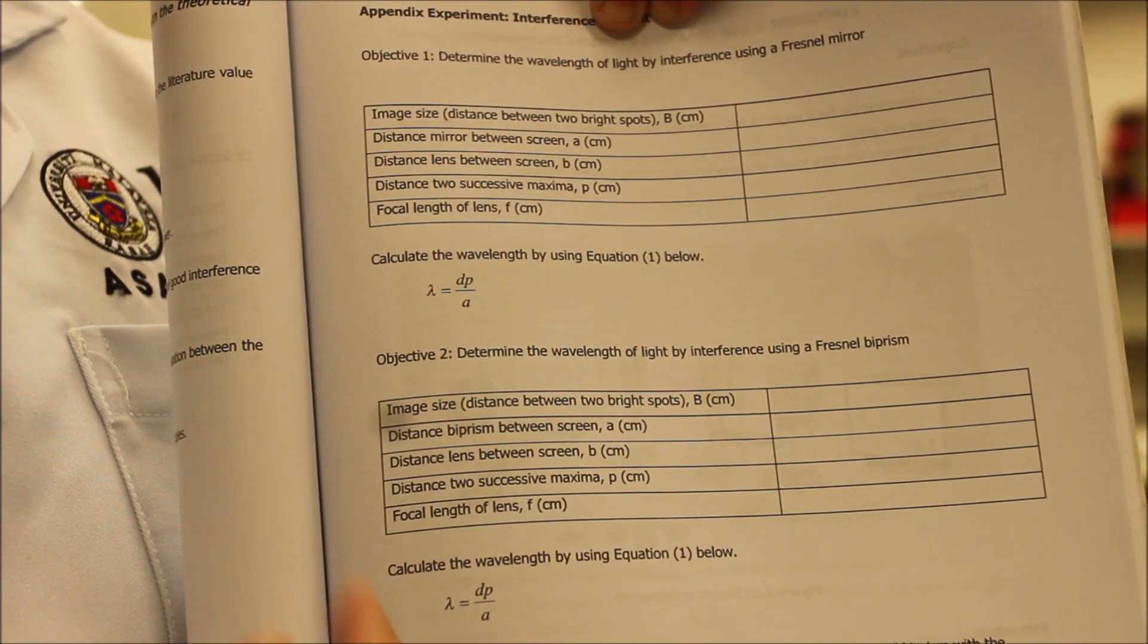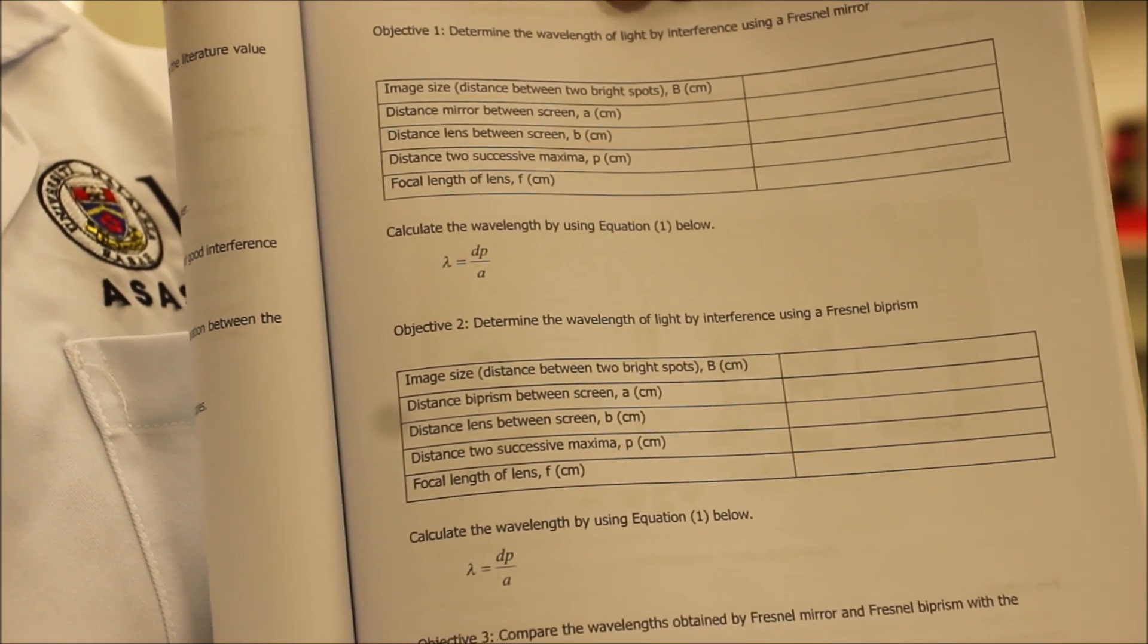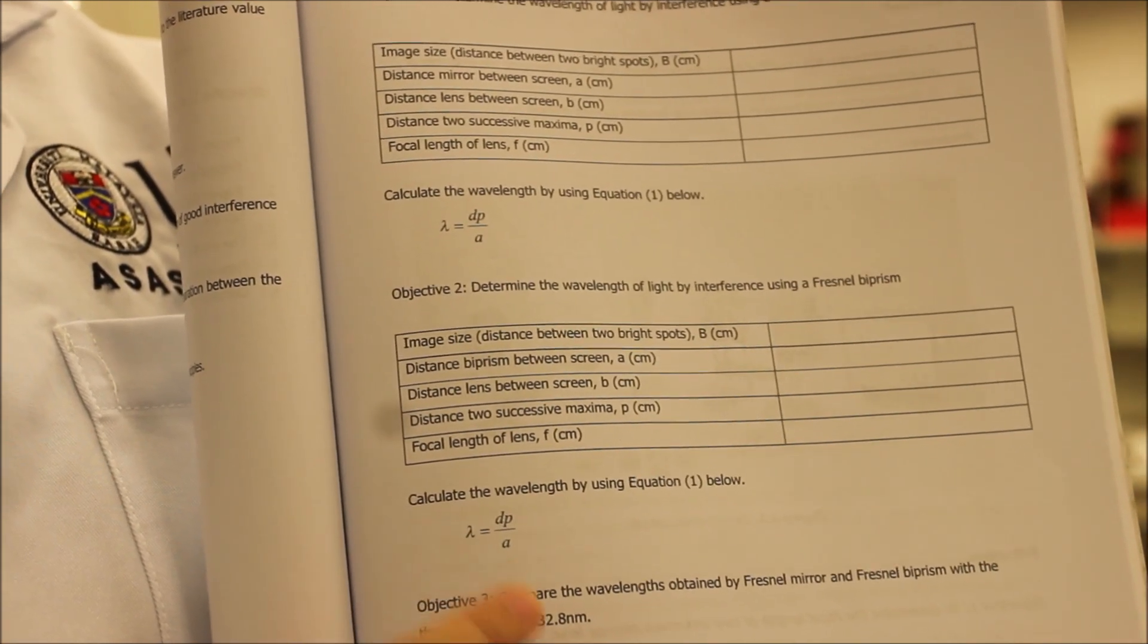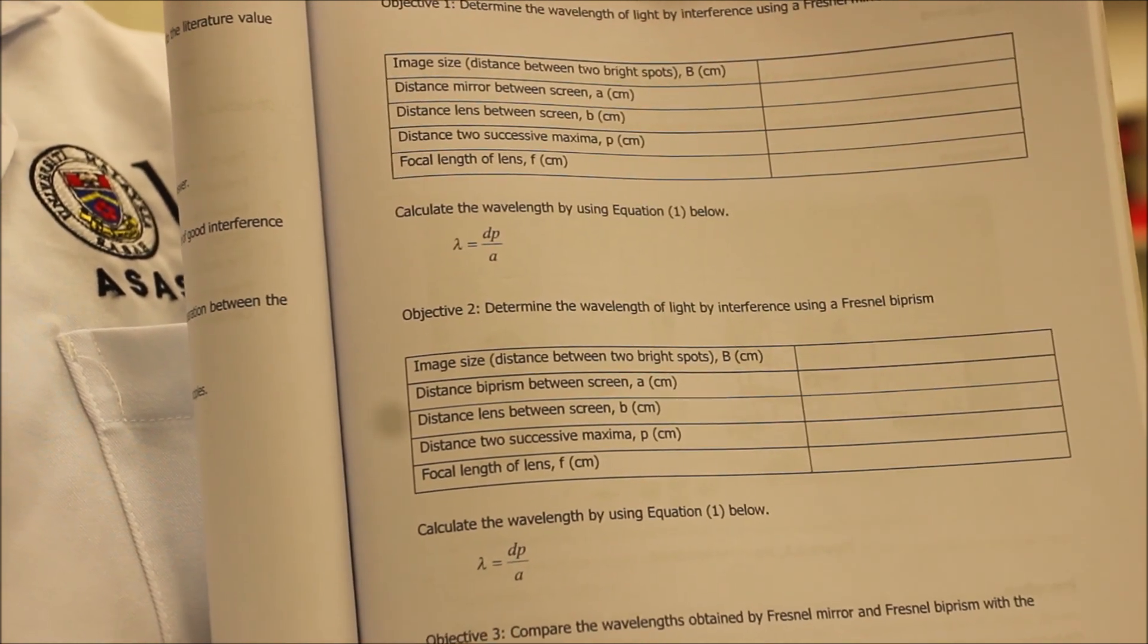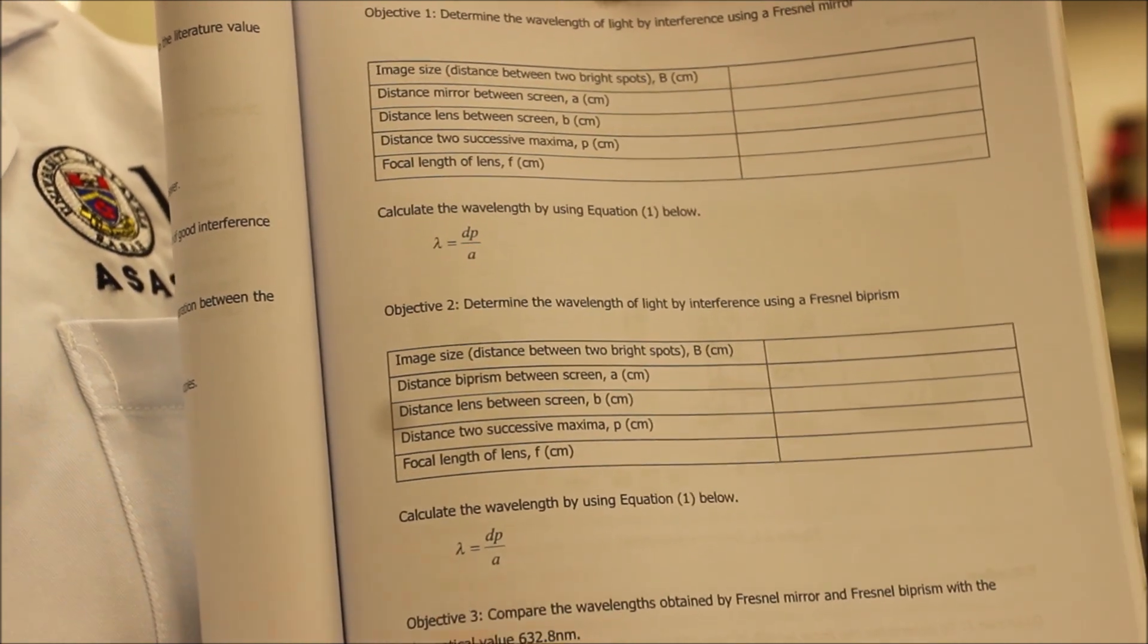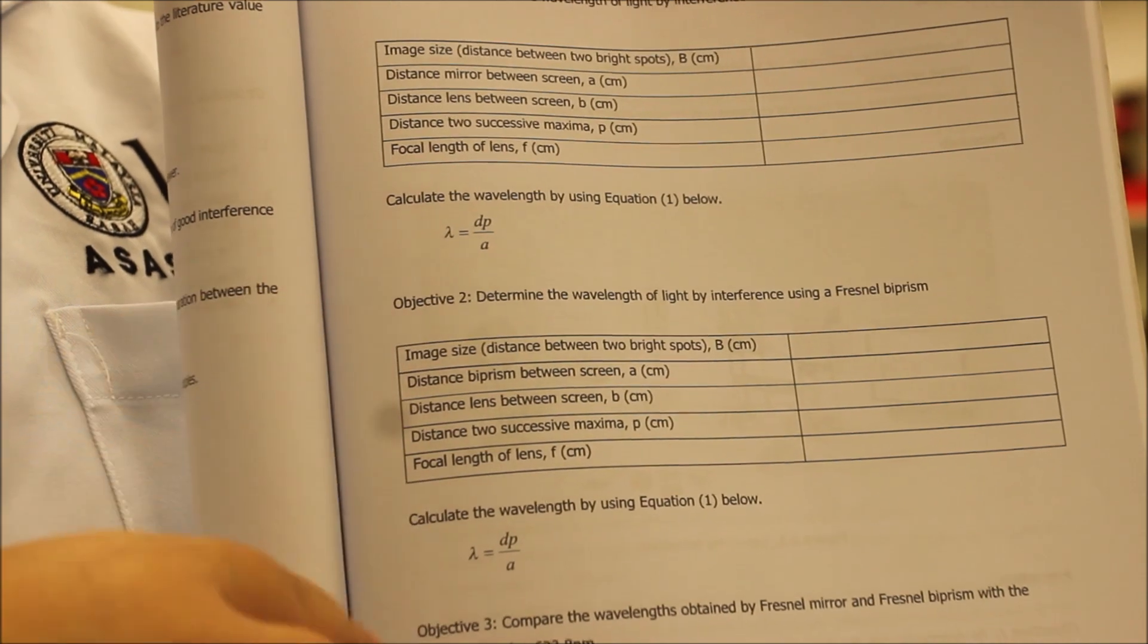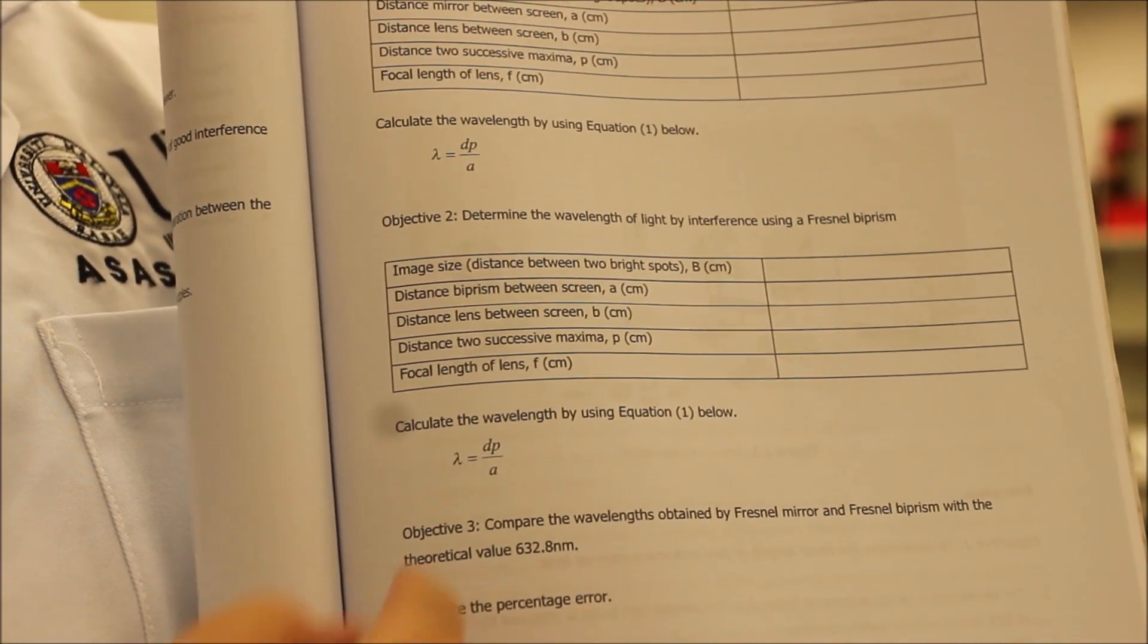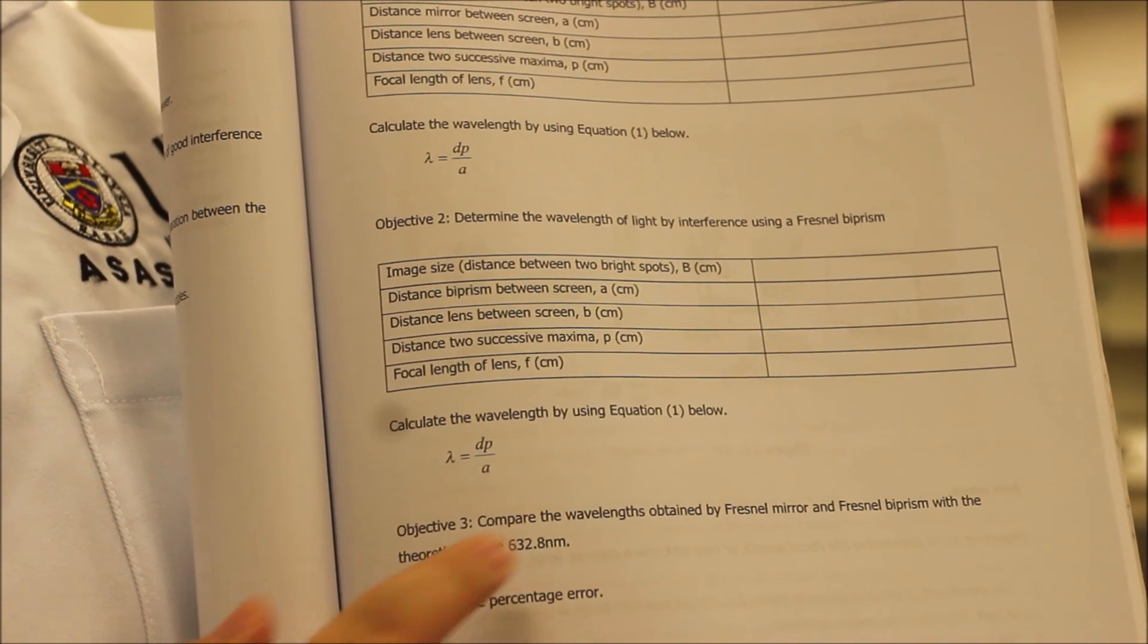All of these parameters also, we have to take it in unit centimeter and the wavelength will be calculated by using the formula of lambda equal to dp over a.